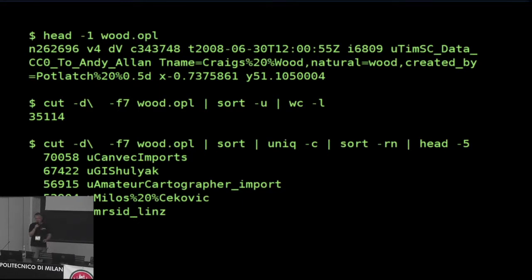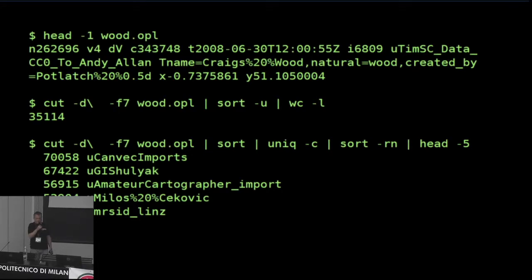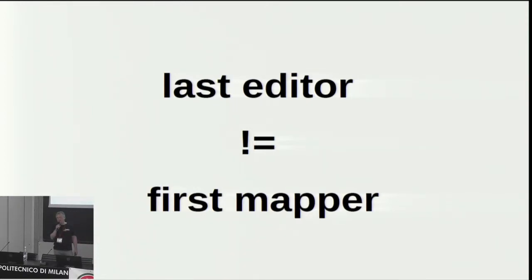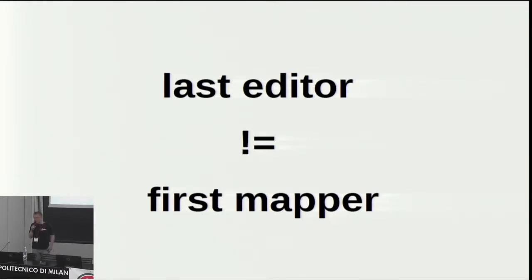If I look at the list in more detail, I would also find real persons who have added that. It is important to remember that the person who last edited something is not necessarily the person who first created it. So it could be that among those 38,000 people who have last edited a natural equals wood object, some of them might have just corrected the geometry and might not be the people who actually introduced the natural equals wood tag to OSM.